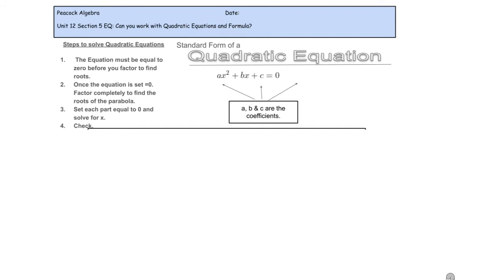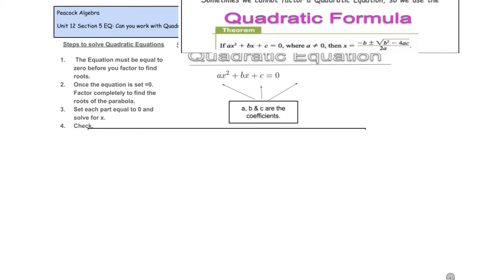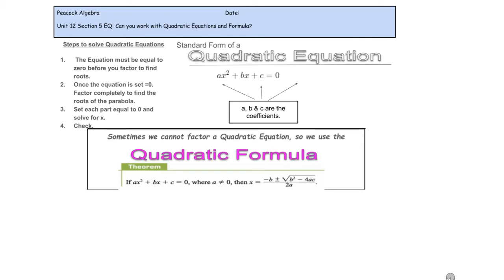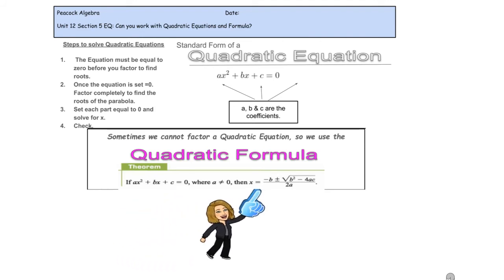So what happens when you can't factor? Sometimes it's just too hard or there's no possible way to do it, so we have a beautiful thing called the quadratic formula. The quadratic formula is: x is equal to negative b, plus or minus the square root of b squared minus 4ac, all over 2a.